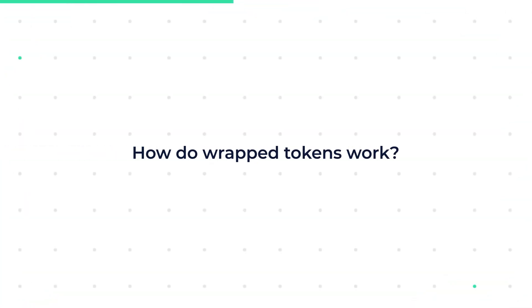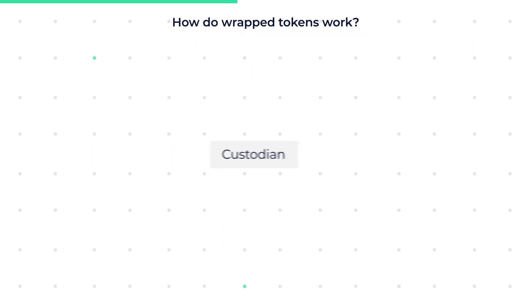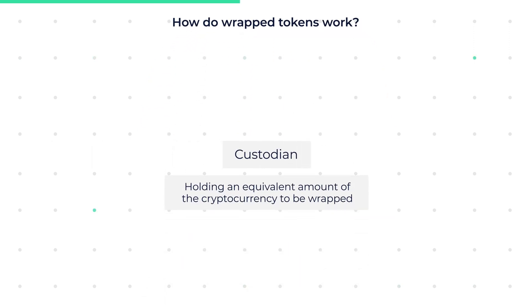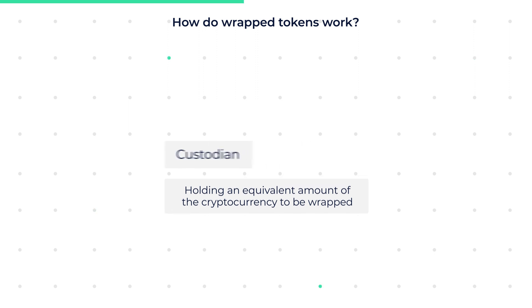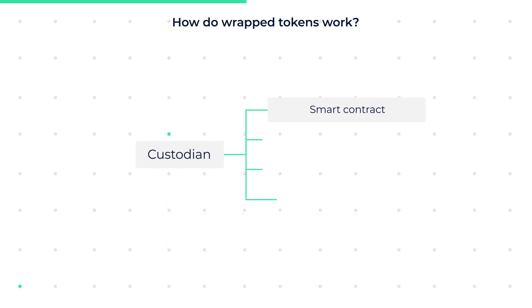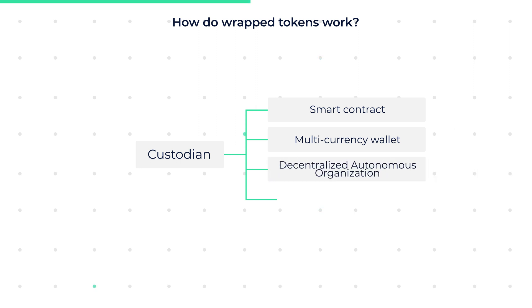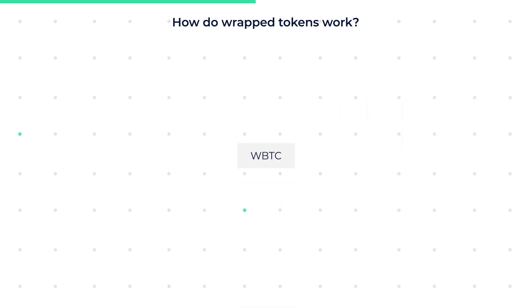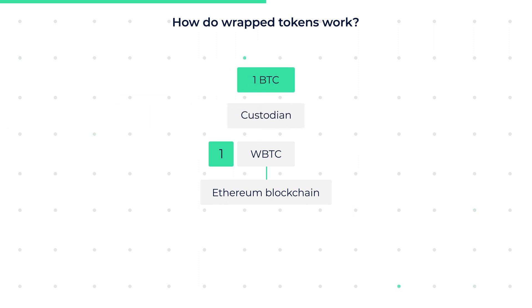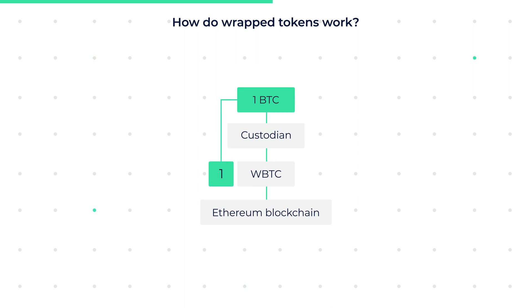How do wrapped tokens work? For wrapped tokens to work, there has to be a custodian to hold an equivalent amount of the cryptocurrency you want to wrap. The custodian can be a smart contract, a multi-currency wallet, a decentralized autonomous organization, or a merchant. Let's take WBTC as our example. Before you can mint one WBTC on the Ethereum blockchain, the custodian must have received one BTC to place on hold. The wrapped token is pegged to the value of the asset, which is why the custodian holds the equivalent asset to mint the wrapped token.